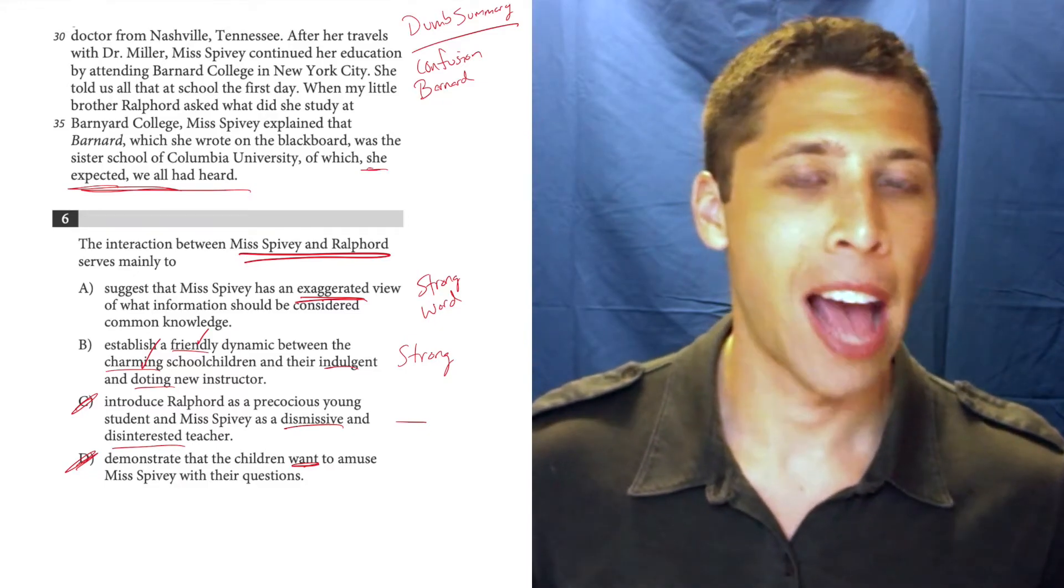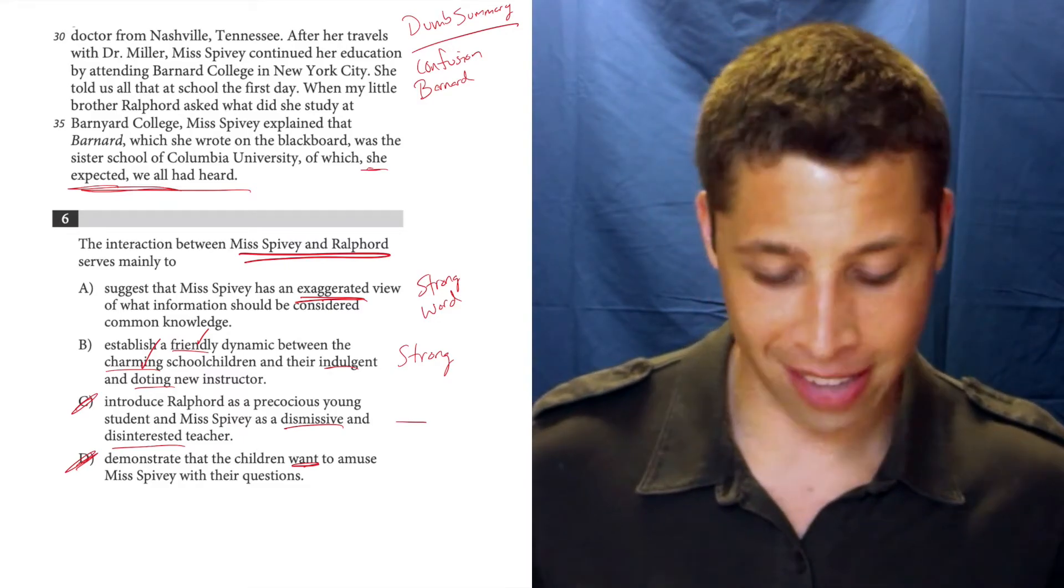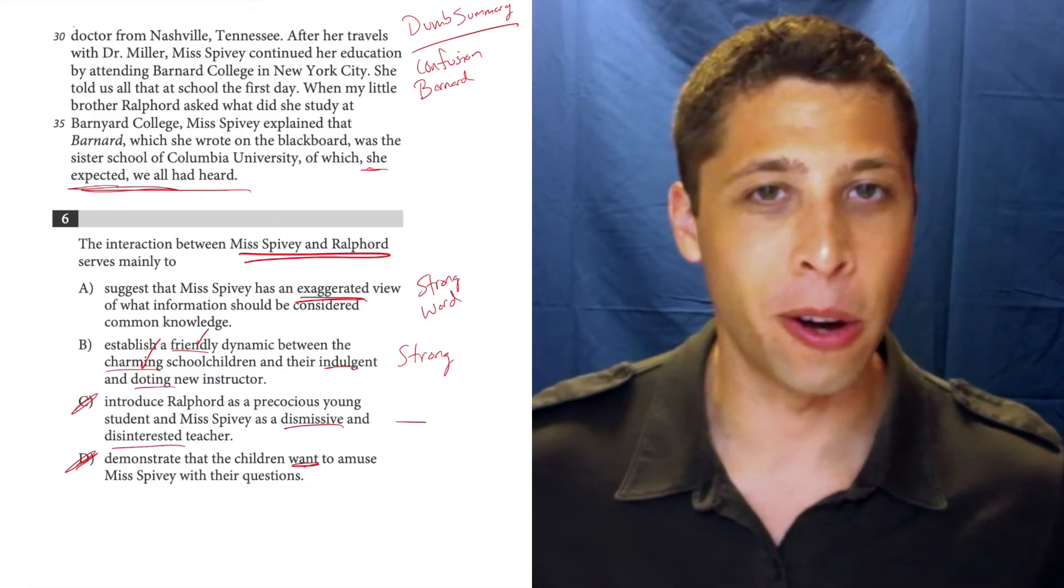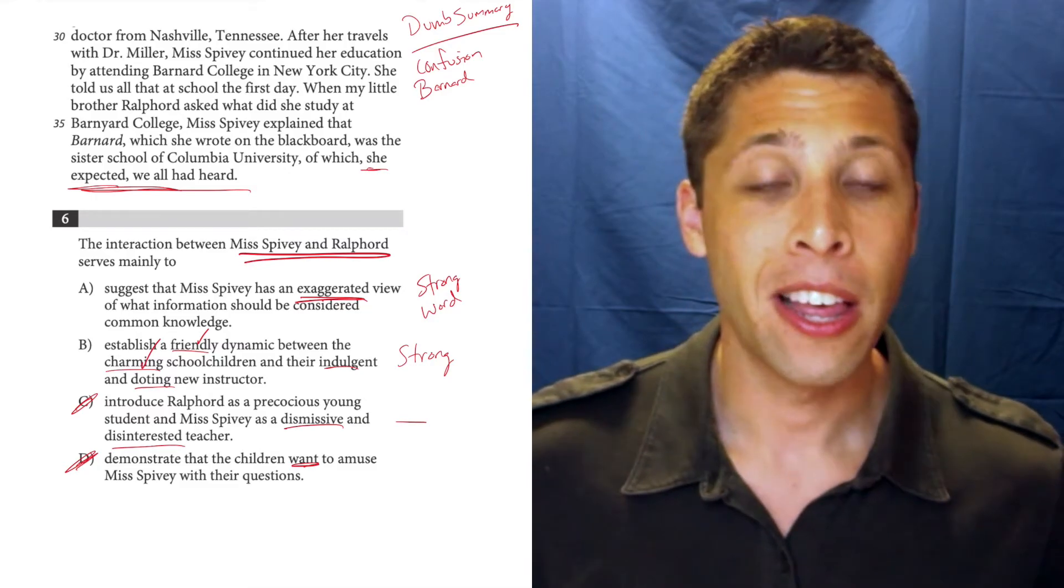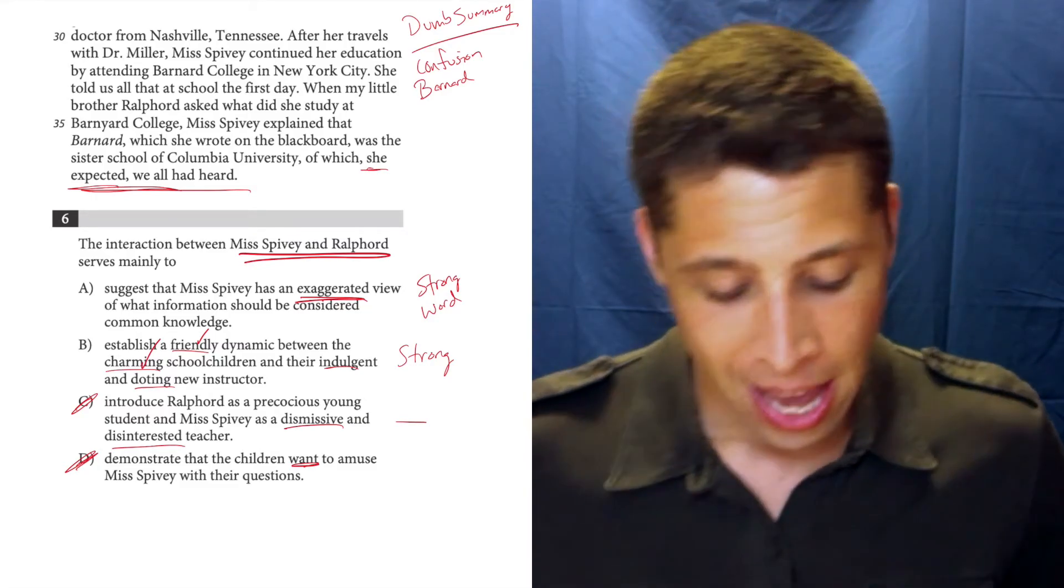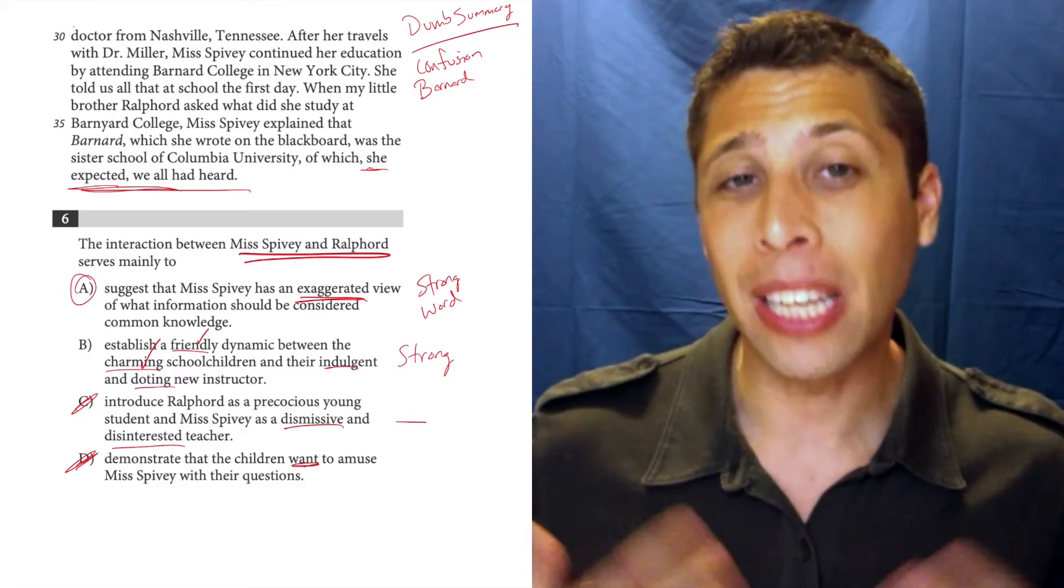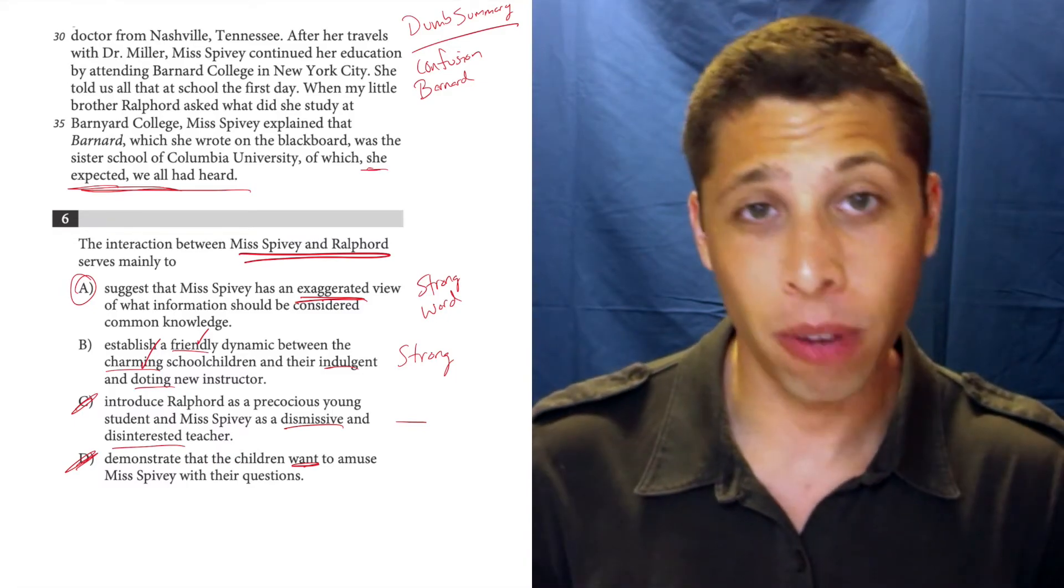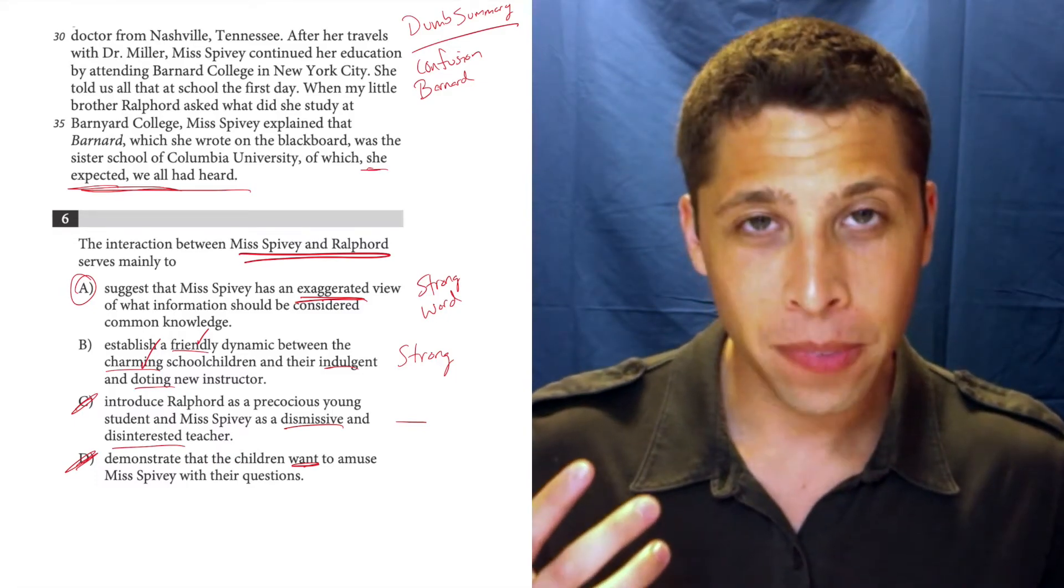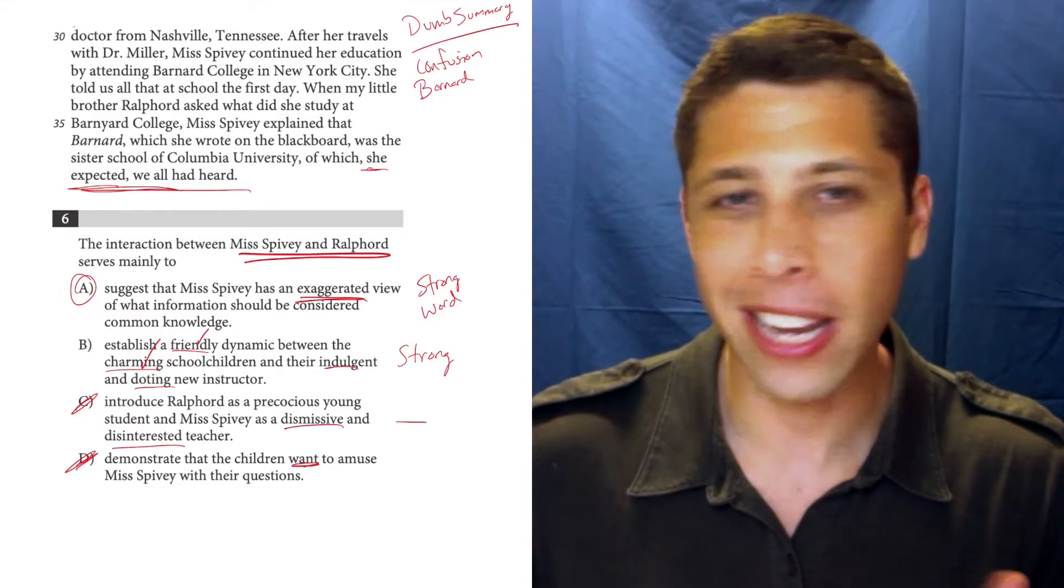Like, how could you not know what these are, is kind of her point of view. And the kid's like seven or something, so obviously he doesn't know what this is, but the teacher expects that he should know it. And so that's why A is the answer here. We have some strong words, but we can kind of prove them if we narrow our focus to them.